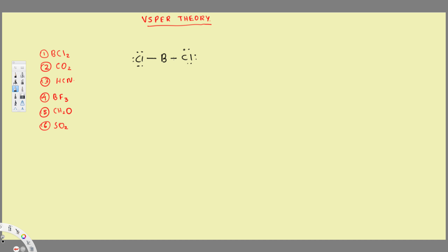The shape of BCl₂ is linear, since it's a straight line. We can also conclude that if you have two atoms around the central atom, the shape is linear. So the 3D shape of this molecule is linear.